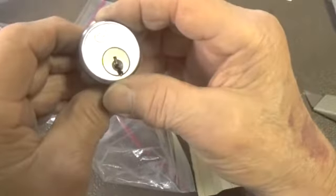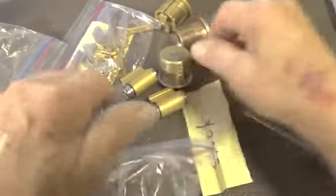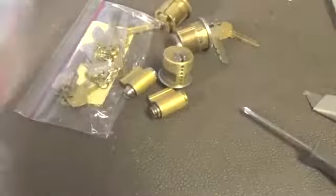And this is another Corbin. Looks like it might be a five pin. We know those are stock locks.